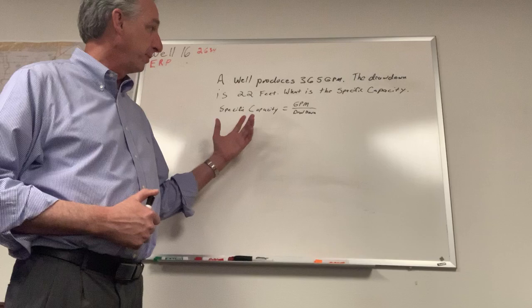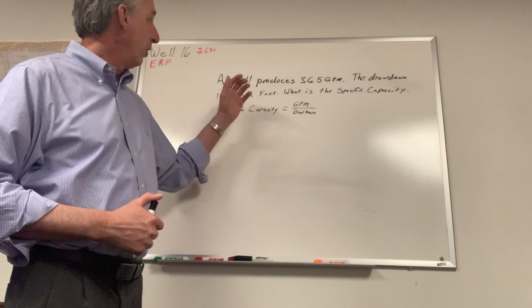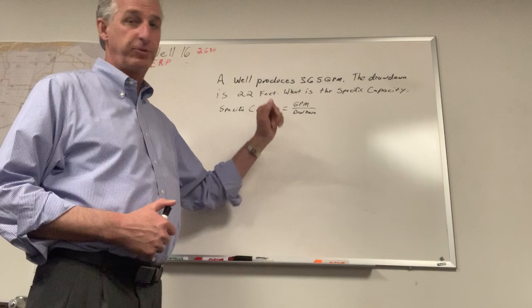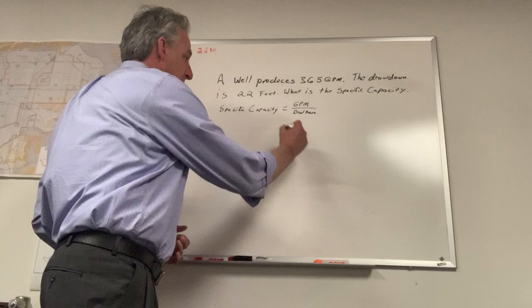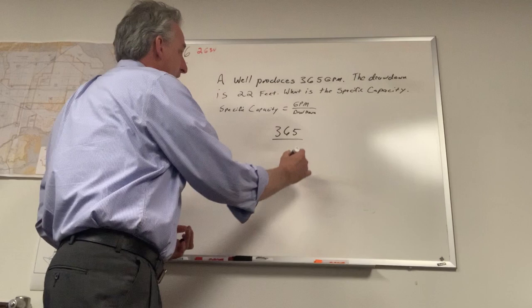The formula for specific capacity is gallons per minute divided by the foot of drawdown — very simple. The question reads: a well produces 365 gallons per minute, the drawdown is 22 feet, what is the specific capacity of this well? So we just take the gallons per minute, which is 365 gallons per minute, and we divide.